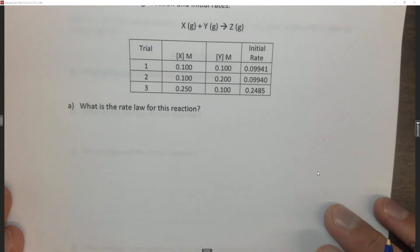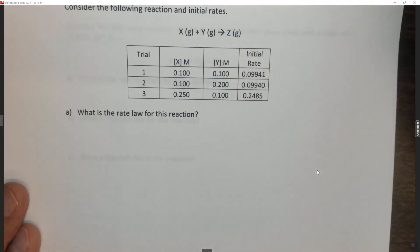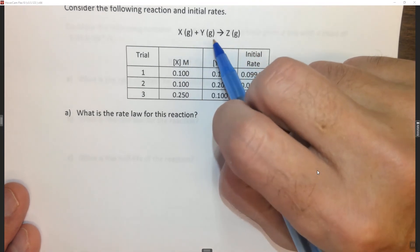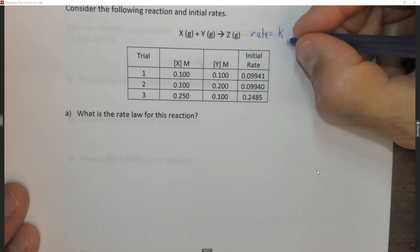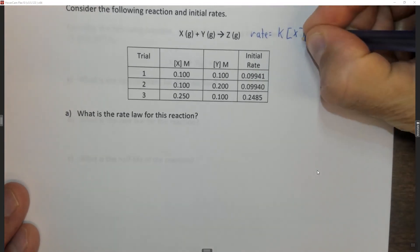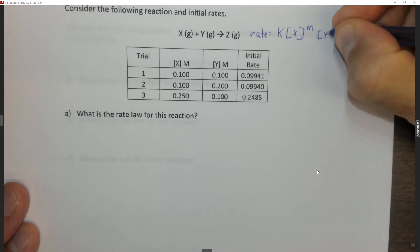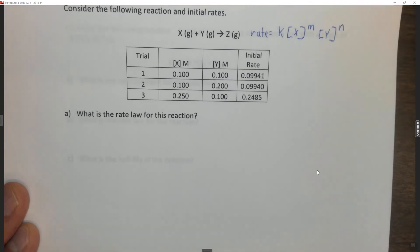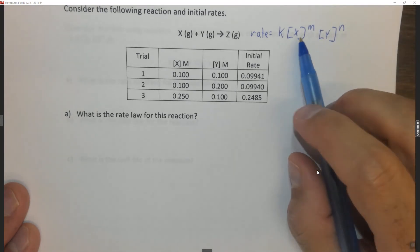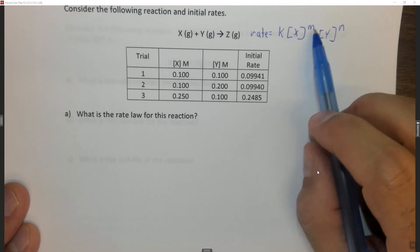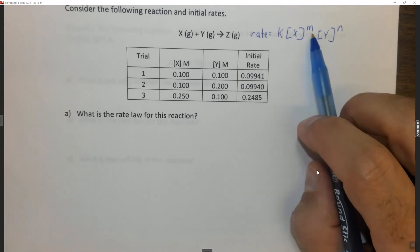The first thing we want to do is write the general rate law for this reaction. Remember this is the overall reaction, not the mechanism, so we don't know the effect of X and Y on the rate. Rate equals K, some constant, times the concentration of X to the M power, times the concentration of Y to the N power. We don't know what order it is with respect to X and we don't know what order it is with respect to Y — we need to determine both.